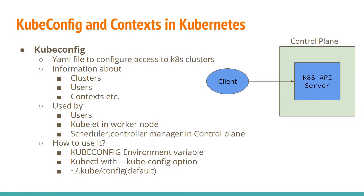Kubeconfig is a YAML file to configure the access to the Kubernetes cluster. If the clients want to access the Kubernetes cluster, they can use the kubeconfig file to access the API server. Here the clients means the administrators, developers and other team members by providing corresponding authentication information. The kubelet in worker nodes and the scheduler and controller manager components inside the control plane would also access the API server using the kubeconfig file.